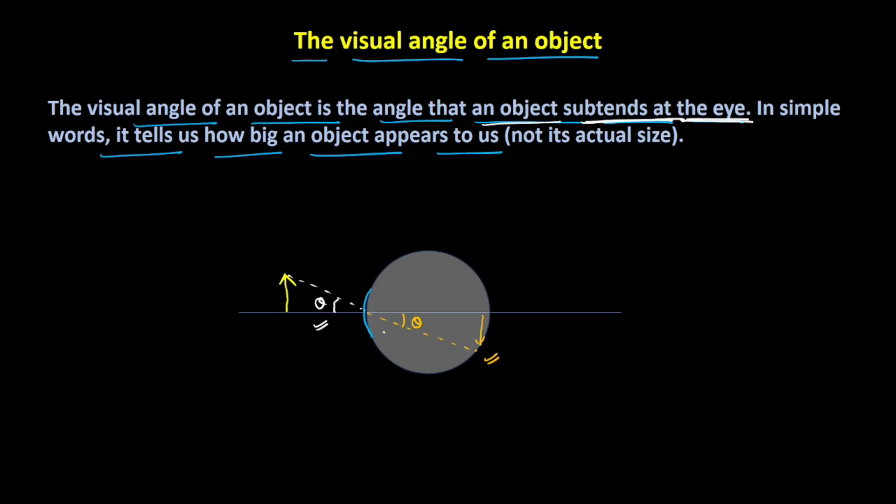Now, one of the interesting properties of the human eye is that the lens in our eye has a flexible focal length. What it means is that there are ciliary muscles that can adjust the size of the focal length, but this can happen only till a certain value.